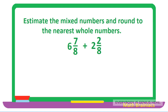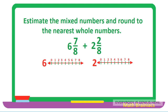Let us work on another example. Estimate the mixed numbers and round to the nearest whole numbers: 6 and 7 over 8 plus 2 and 2 over 8. We represent the fractions through the number line, apportioned according to the denominator. Our first fraction is 7 over 8, so we point the arrow to number 7 on the number line. Number 7 is much closer to 8, so we round it up to 1.